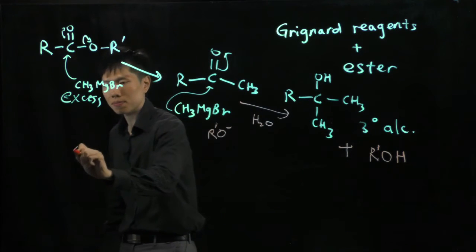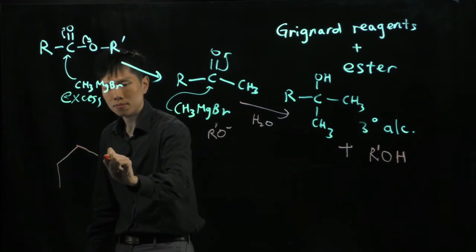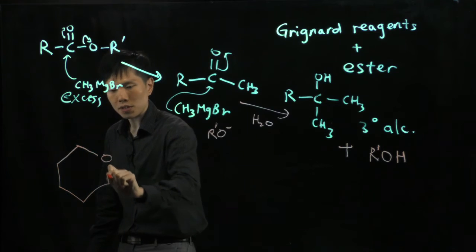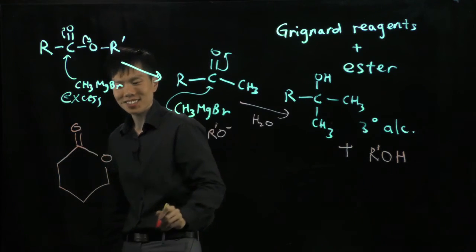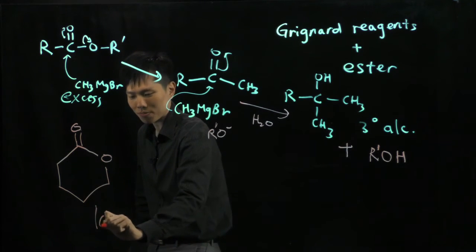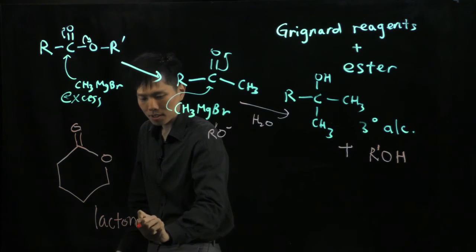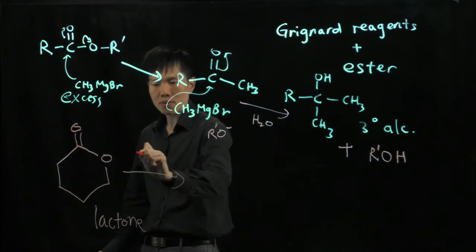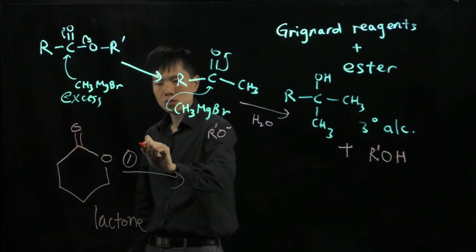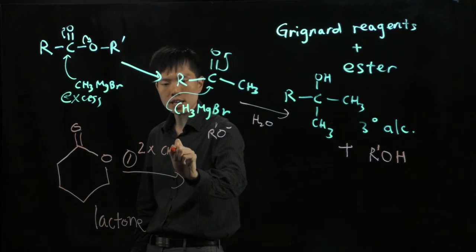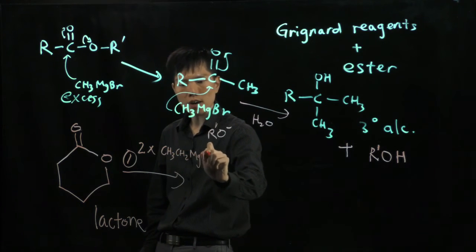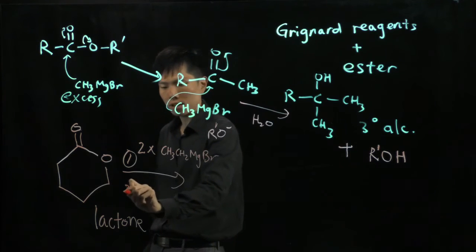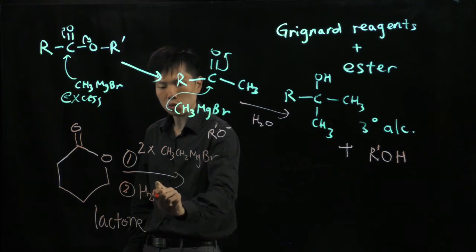Now let's try this example. Let me just give you a cyclic ester. Cyclic ester, we call it a lactone. Here, if I add two equivalents of CH3CH2MgBr followed by water. What do we have?